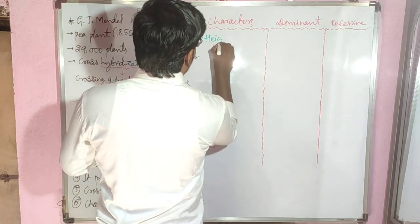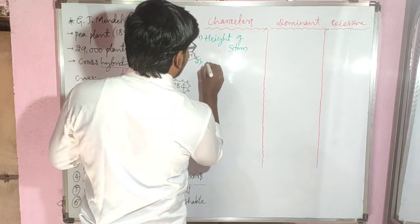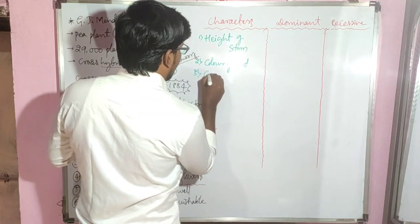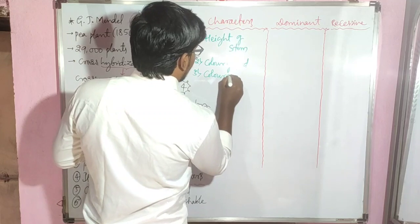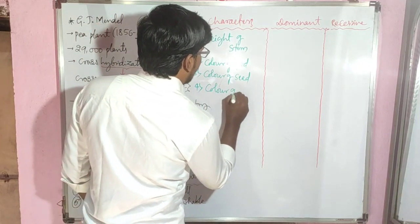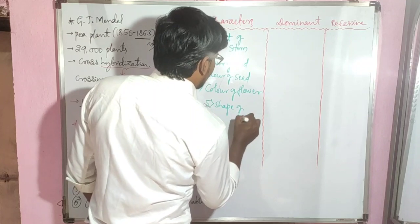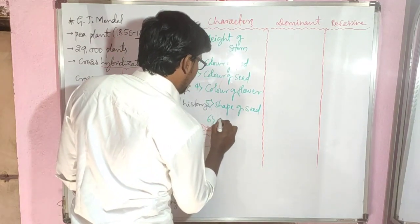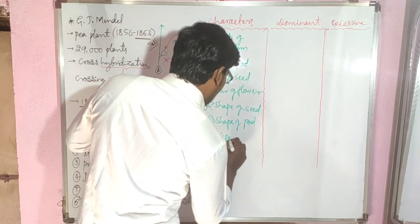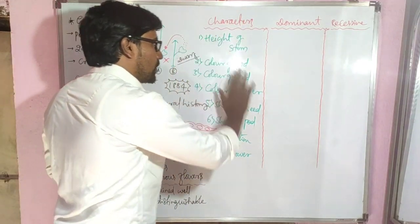The seven characters Mendel studied are: first, height of the stem; second, color of the pod; third, color of the seed; fourth, color of the flower; fifth, shape of the seed; sixth, shape of the pod; and seventh, position of the flower.